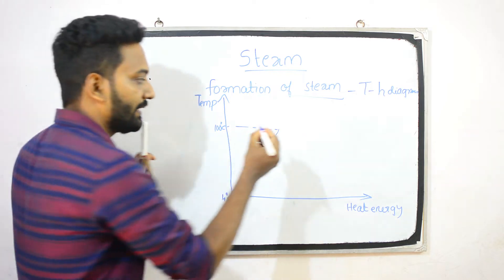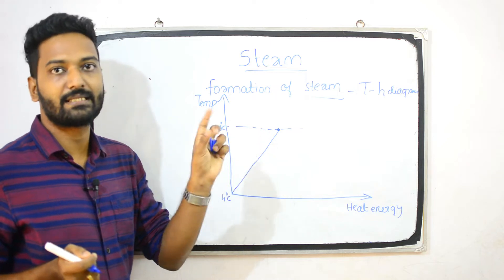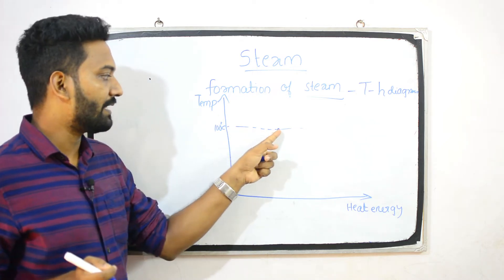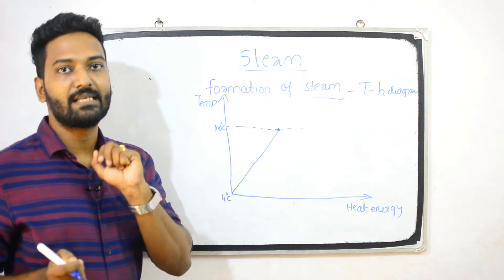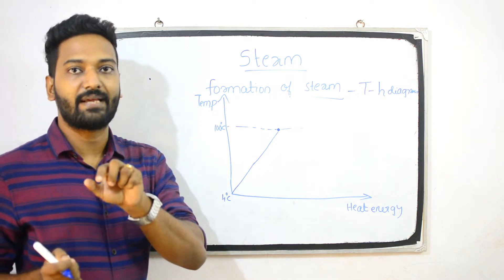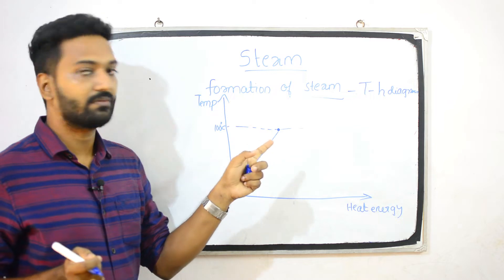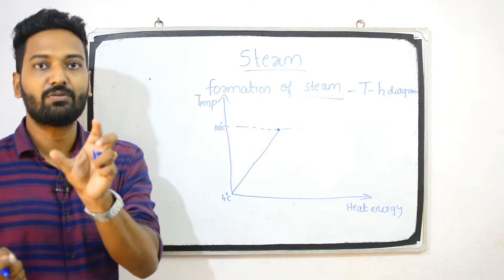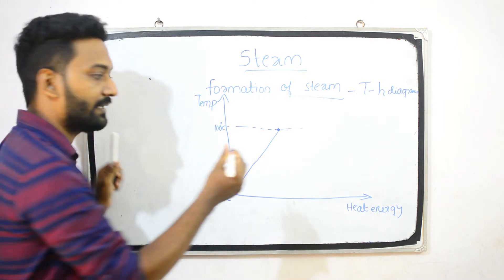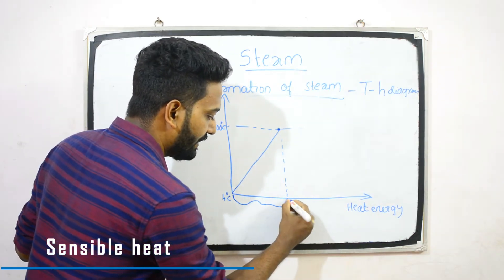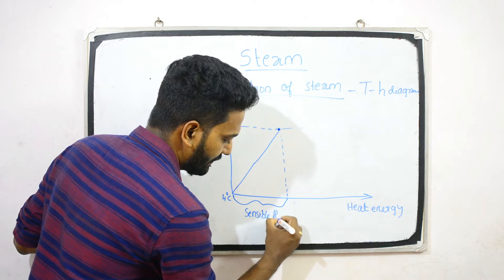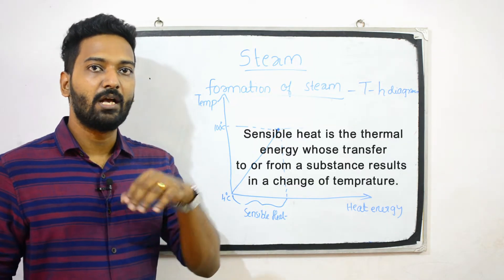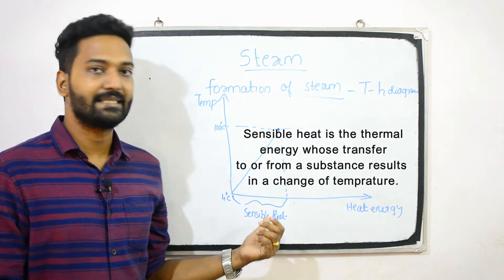At 100 degrees Celsius, at the E point, steam formation starts. Heat energy continues to be added while the temperature is constant. So, what do you mean by sensible heat? Sensible heat is the thermal energy whose transfer to or from a substance results in a change of temperature.